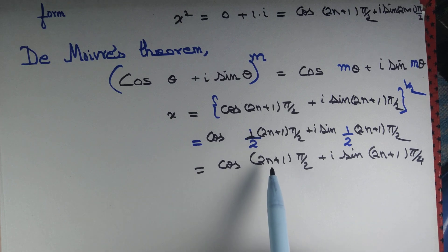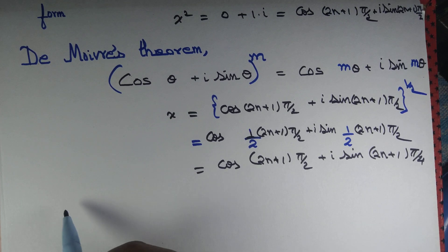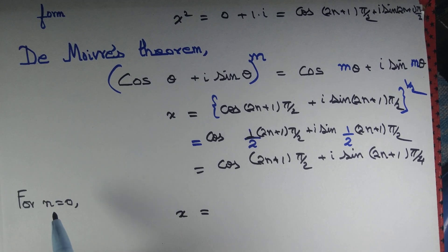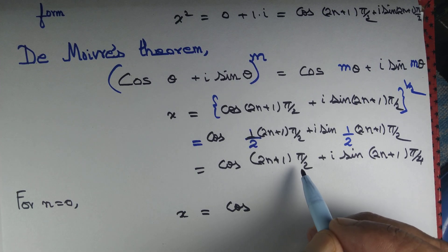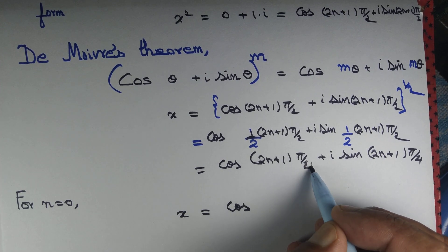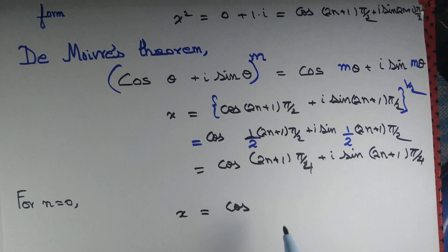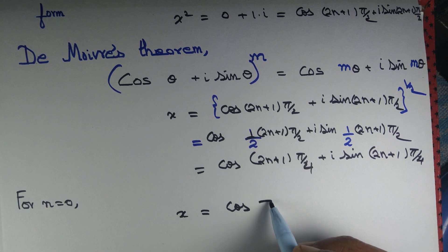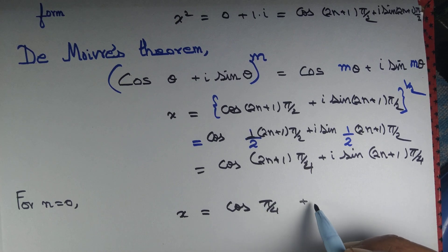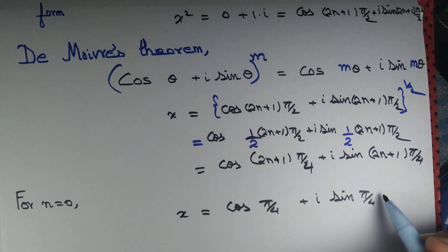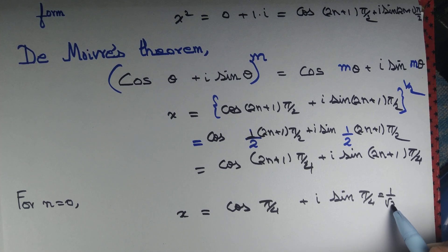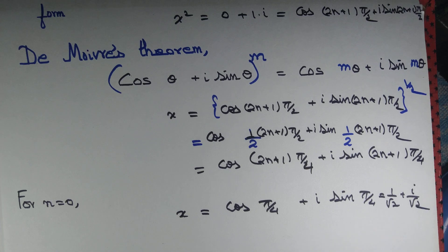Let's take n = 0. For n = 0, x = cos(π/4) + i sin(π/4), which equals 1/√2 + i/√2.